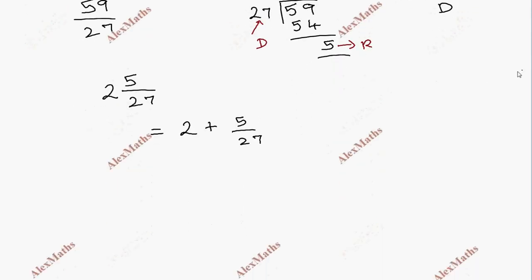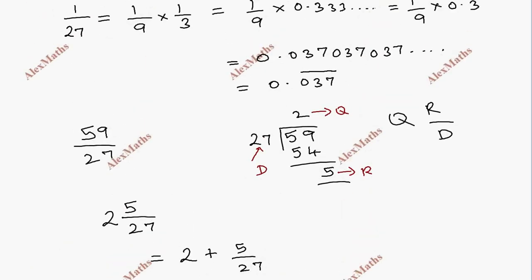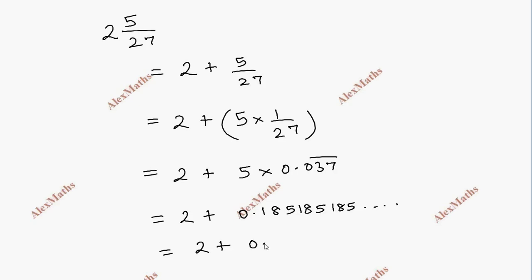This is further 2 plus 5 divided by 27, which is 2 plus 5 into 1 divided by 27. We already have the value of 1 by 27, that is 0.037. So this part repeats. This gives 5 times 0.037 equals 0.185. Three digits repeat, so 2 plus 0.185 bar equals 2.185 bar.